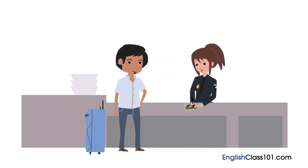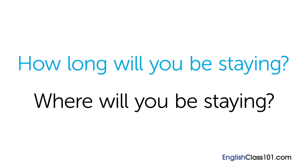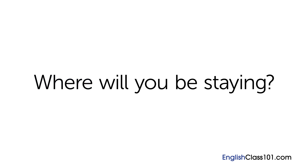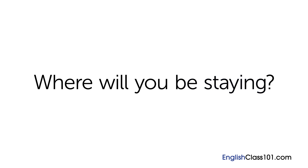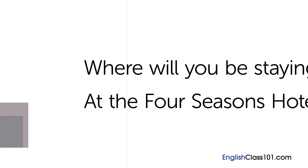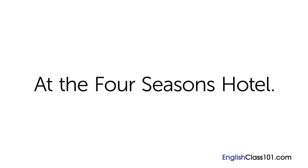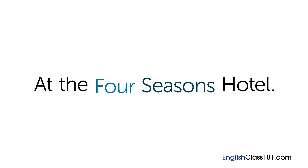Do you remember the second question the immigration officer asked Gustavo? 'And where will you be staying?' This question is identical to the first, except instead of asking 'how long,' the immigration officer is asking to find out which hotel or address a visitor will be staying at. In response, Gustavo gives the name of his hotel: 'At the Four Seasons Hotel.' First is the word 'at,' followed by the name of the hotel: 'The Four Seasons Hotel.' Together: 'At the Four Seasons Hotel.'